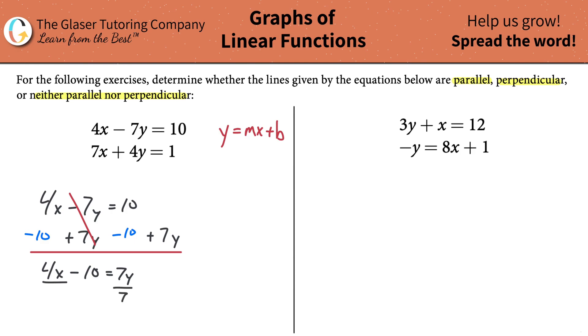I'm going to get y all by itself, which means that I got to divide out 7 for both sides. So now I would be left with, and we can distribute basically the 7 over each of the two terms in the numerator. This is going to be 4 over 7x minus then 10 over 7 is going to be equal to y.